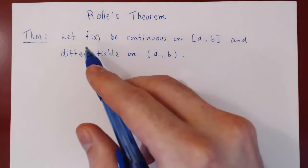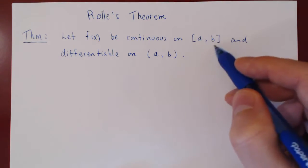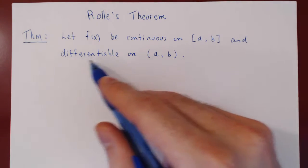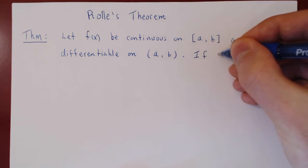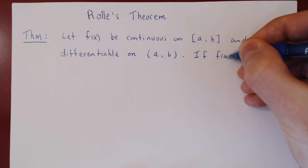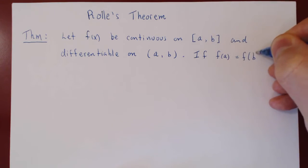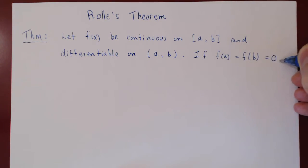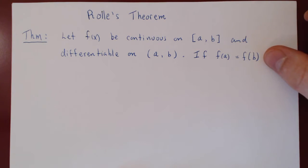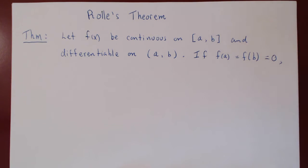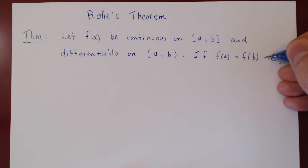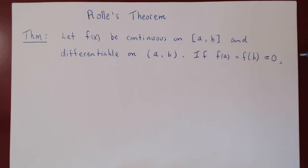So these are the assumptions: f(x) is continuous on the closed and bounded interval [a, b], and also differentiable on the open interval (a, b). One last condition: if f(a) equals f(b) equals 0. It doesn't have to be 0, but this will simplify the argument and the proof. As long as f(a) equals f(b), the result still holds, but we'll go with the special case where both are 0.